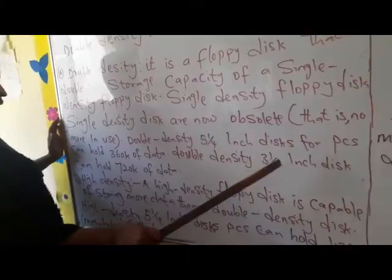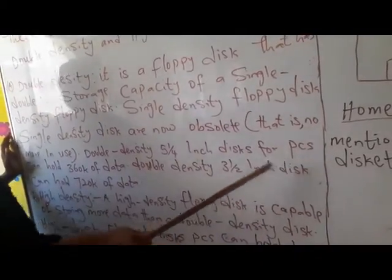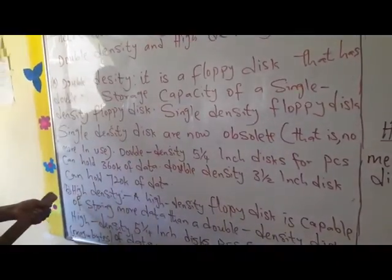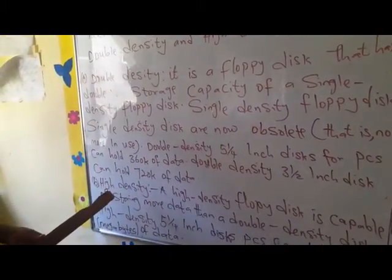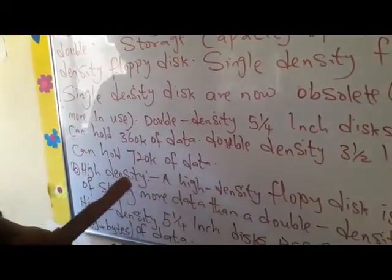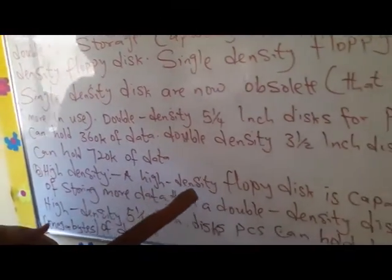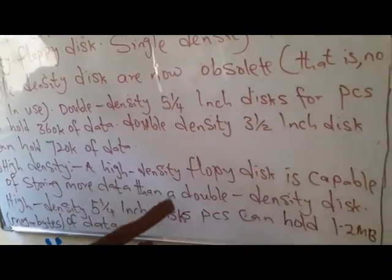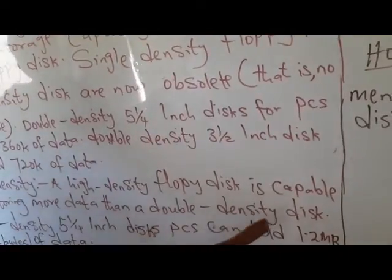Can hold 360 of data. Double density can hold 3.5 inch disk. Then here, the second one, we have high density. The second one, we have high density. So the high density, a high density floppy disk is capable of storing more data than a double density disk.